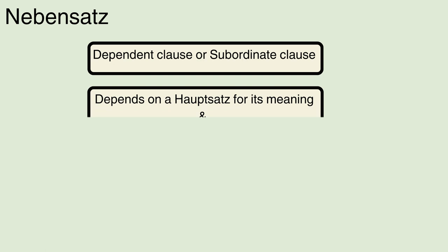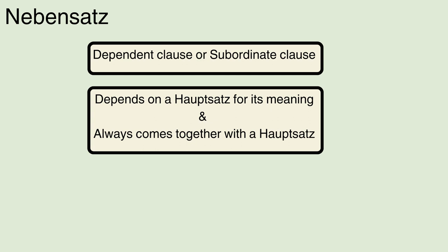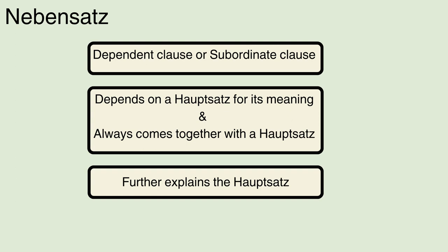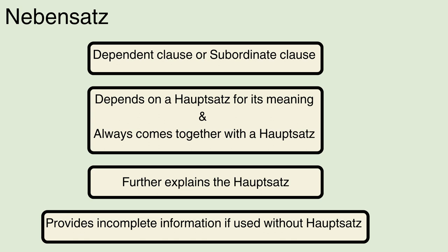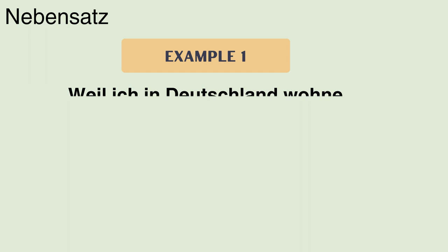A Nebensatz is also called a dependent clause or subordinate clause in English. A Nebensatz depends on a Hauptsatz for its meaning and will always come together with a Hauptsatz; it is used to further explain the Hauptsatz. If a Nebensatz is used without a Hauptsatz, it provides incomplete information to the reader. For example: 'Weil ich in Deutschland wohne' — 'Because I live in Germany.'